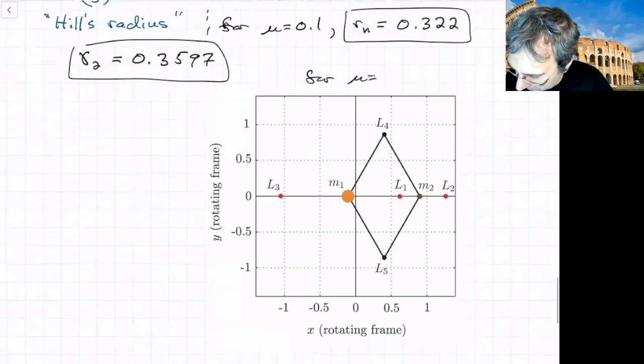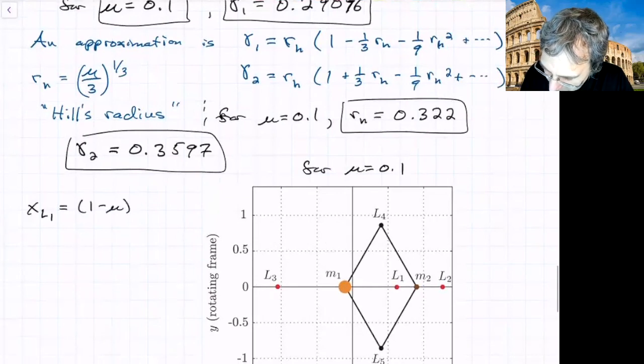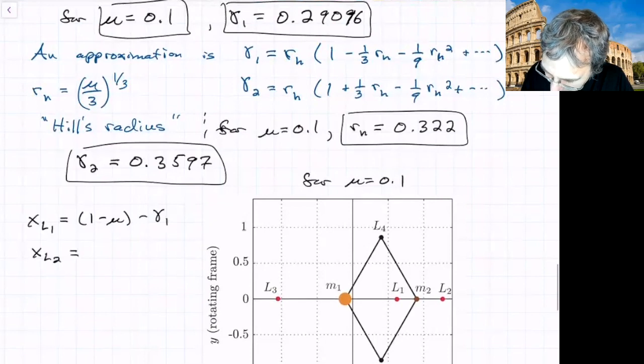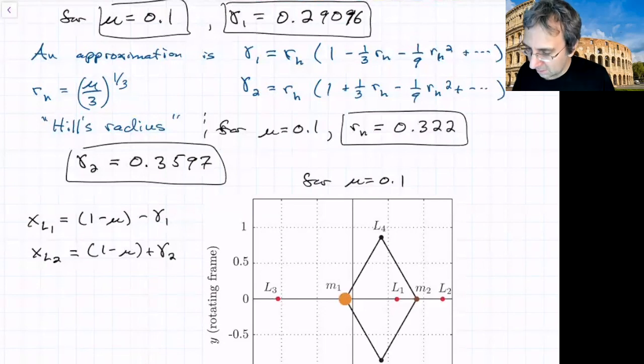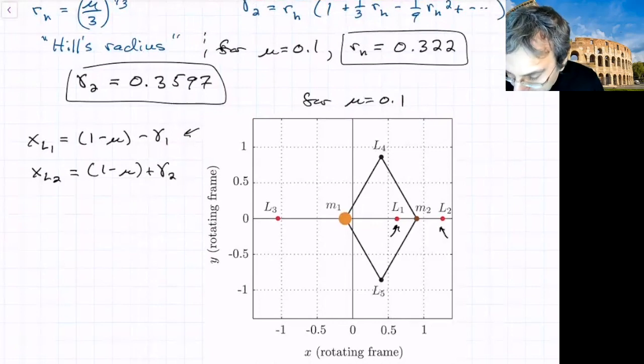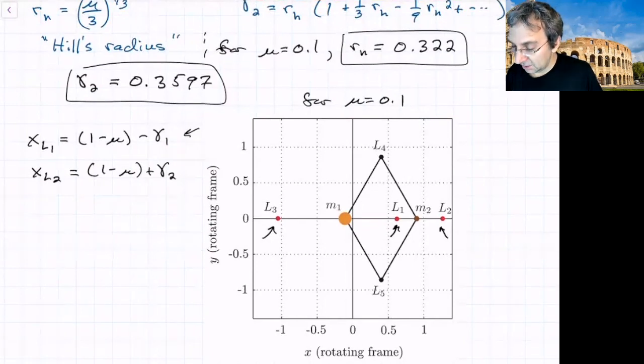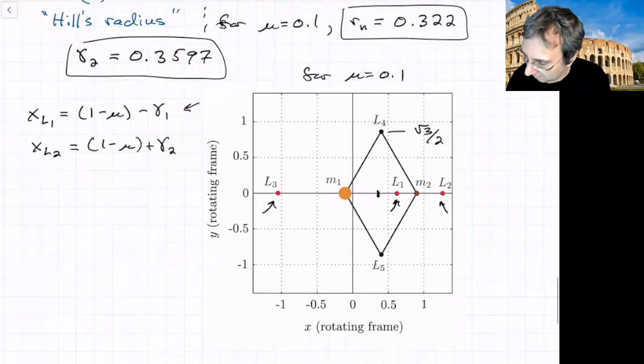Let me show what the locations look like for mu of 0.1. You've got L4, L5. X of L1 will be 1-mu minus gamma_1. X of L2 will be 1-mu plus gamma_2. So L1 is at about 0.6, and L2 is at about 1.25. If you calculate gamma 3, you can find where L3 is. L4 and L5 are always the easiest - exactly in between the two masses, and the y value is square root of 3 over 2.